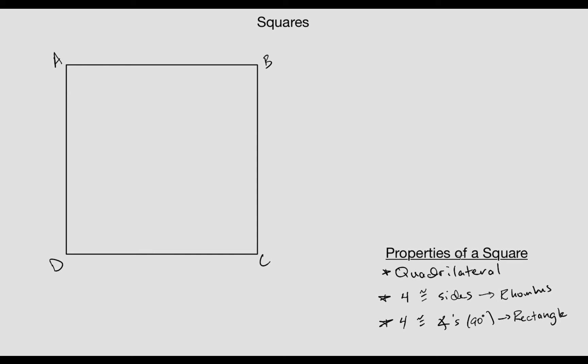Let's start by putting in our definition: it has four congruent sides and four right angles, and then everything else follows as well.